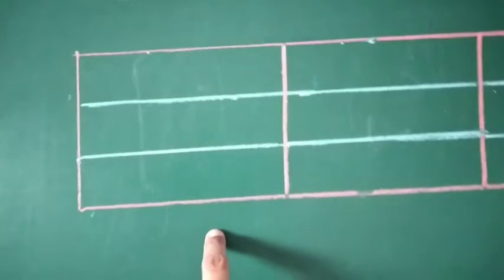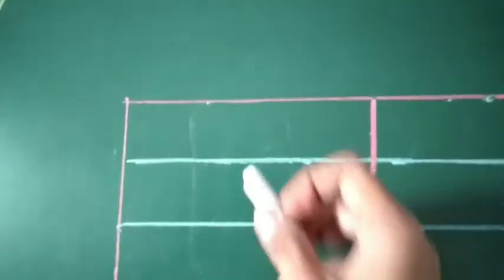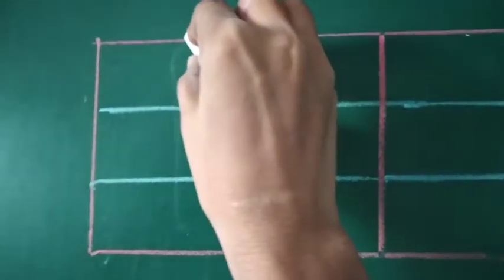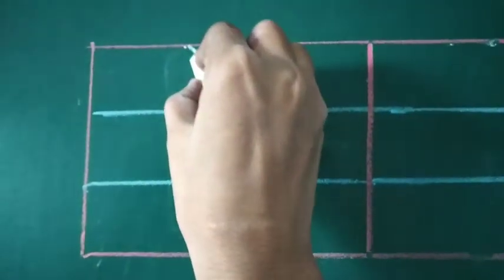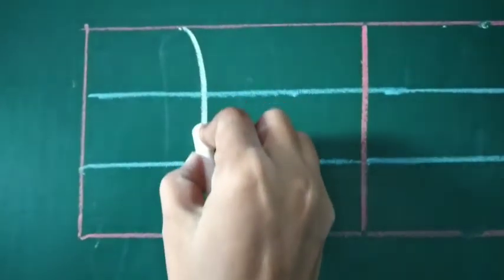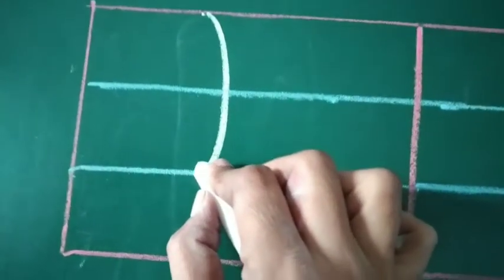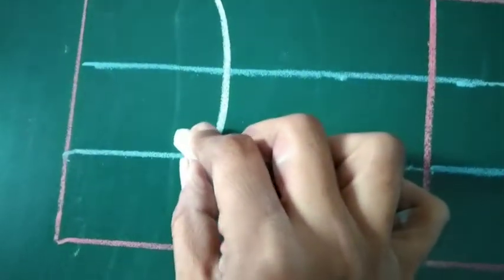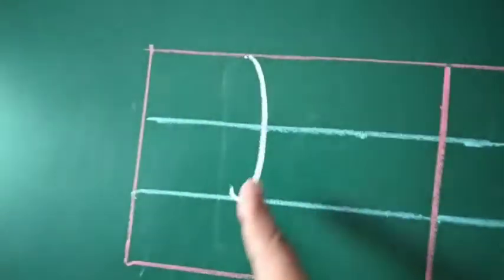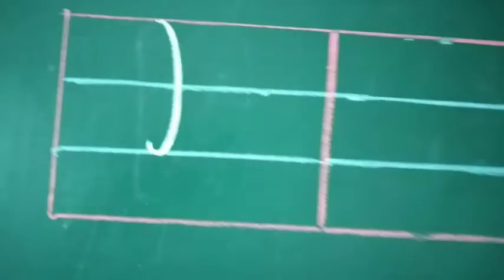So in the first part, what will we do? We have to start from the red line. We will make a line like this — not straight, not a standing line. We have to make a small curve like this, a little tilted.